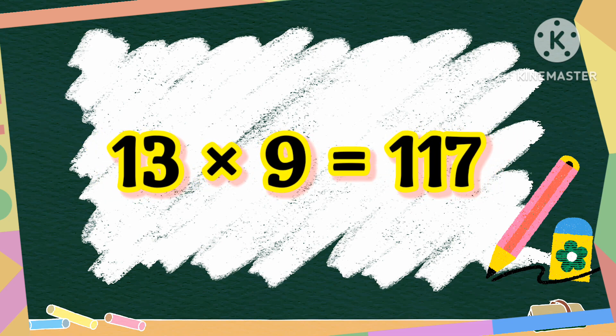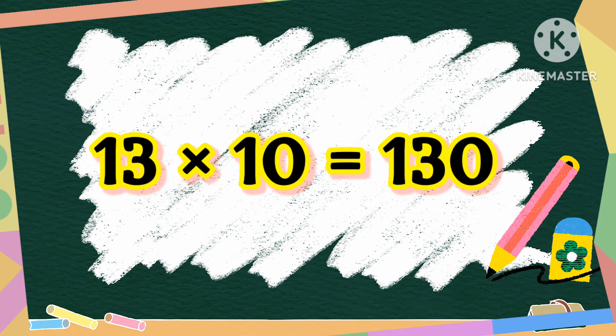13 nines are 117. 13 nines are 117. 13 tens are 130. 13 tens are 130. Kids, read 13 tens are 130.